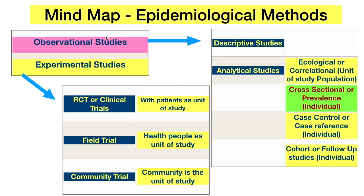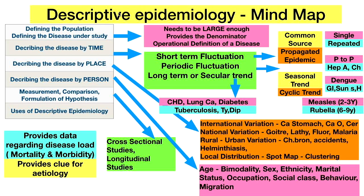Epidemiological methods are broadly divided into observational studies and experimental studies. Observational studies include descriptive studies and analytical studies. In ecological or correlational studies, the unit of study is the population group. In analytical designs — cross-sectional, case-control, and cohort — the individual is the unit of study. Cross-sectional studies are also called prevalence studies, case-control studies are called case-reference studies, and cohort studies are called follow-up studies. In experimental studies: randomized control trials use patients, field trials use healthy people, and community trials use the community as the unit of study.